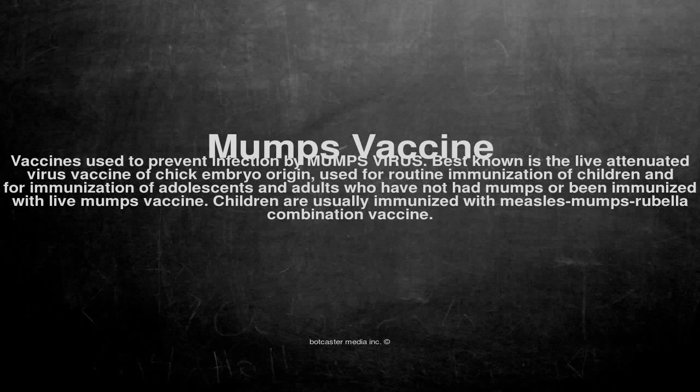Mumps vaccine. Vaccines used to prevent infection by mumps virus. Best known is the live attenuated virus vaccine of chick embryo origin, used for routine immunization of children and for immunization of adolescents and adults who have not had mumps or been immunized with live mumps vaccine.